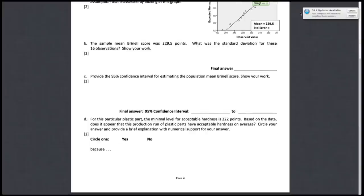Last part in this question is part D. They ask you for this particular plastic part, the minimal level for acceptable hardness is 222 points. Based on the data, does it appear that this production run of plastic parts have acceptable hardness on average? Sort of your answer and provide a brief explanation with numerical support for your answer.